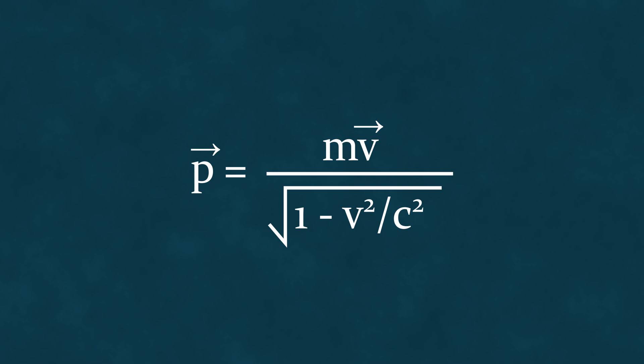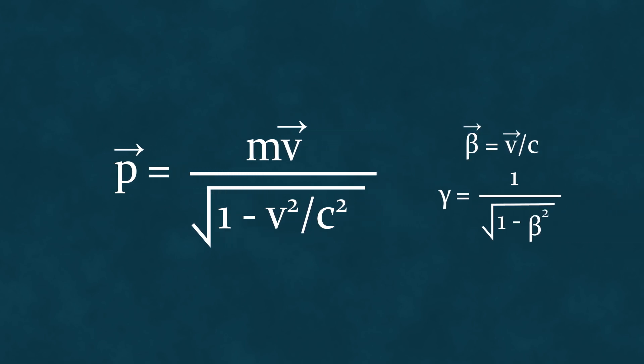To avoid carrying all these fractions and roots, in relativistic mechanics, such abbreviations are often used. The ratio of an object's speed to the speed of light is denoted as beta. The quantity obtained by dividing one by the square root of one minus beta squared is commonly denoted as gamma. One could say that beta indicates the extent to which relativistic effects should be considered for a given object, and gamma allows us to estimate the magnitude of these effects.